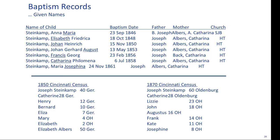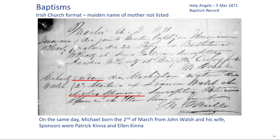The Irish ones, unfortunately, sometimes didn't put the mother's maiden name — they thought it wasn't all that important, but you'll see that time and time again. One entry says 'on the same day, Michael born the second of March from John Walsh and his wife' — they didn't even name the mother. Most of the time you'll see 'John Walsh and his wife Mary' without her maiden name. You may come across that quite a bit.